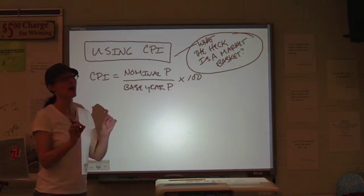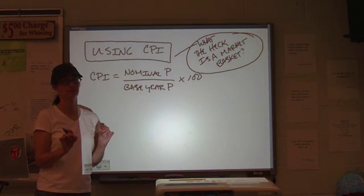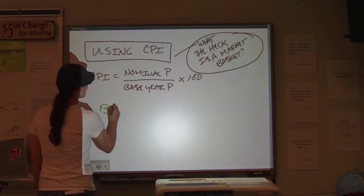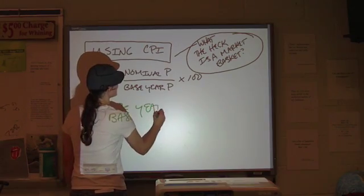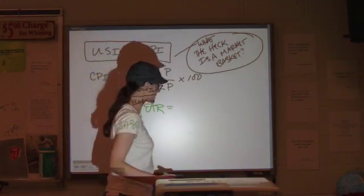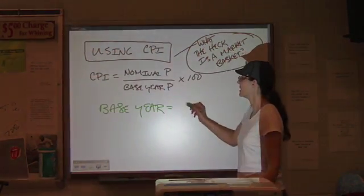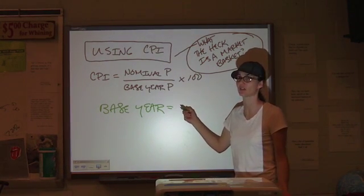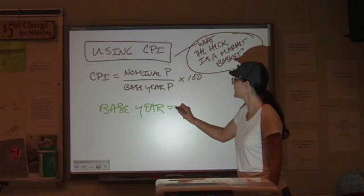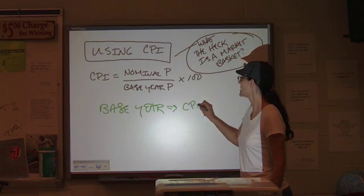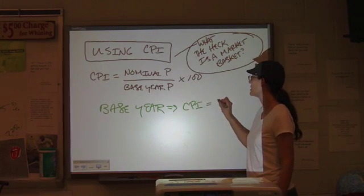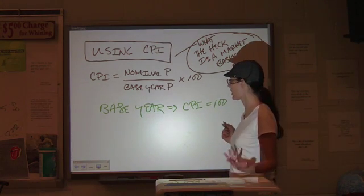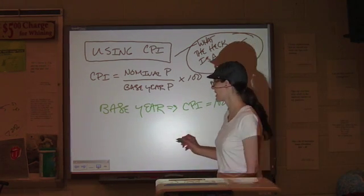So, if you have the base year, if you are adding all the prices for the base year, the base year is going to be an odd case because what you're going to get is the nominal price the same as the base year price because that's the year that you're dealing with. So, in a base year, the CPI is going to equal 1 times 100. It's going to be 100. Let's say for 10 years later,